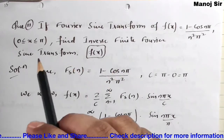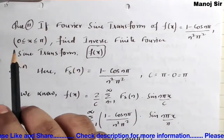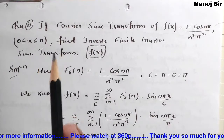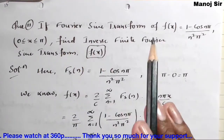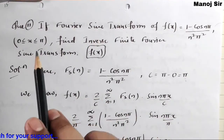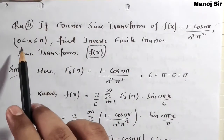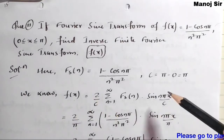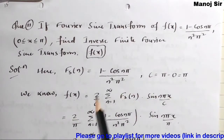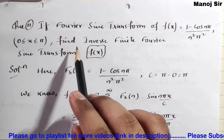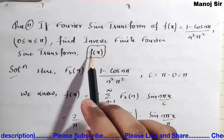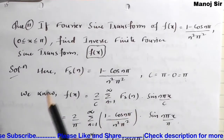The limit is from 0 to π, which means this is a finite transform — specifically a finite Fourier sine transform, because we have sine here. We need the value of c in order to find the inverse finite Fourier sine transform, that is f(x).